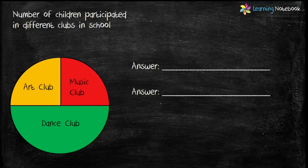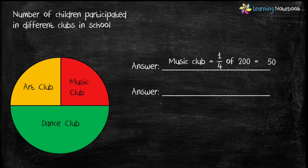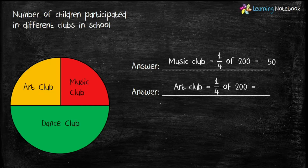Now let's find the number of children who participated in the music club. The music club is represented by one-fourth of the circle and the total students is 200, so number of students in music club = 1/4 of 200 = 50. In the same way, the number of children in art club = 1/4 of 200 = 50.